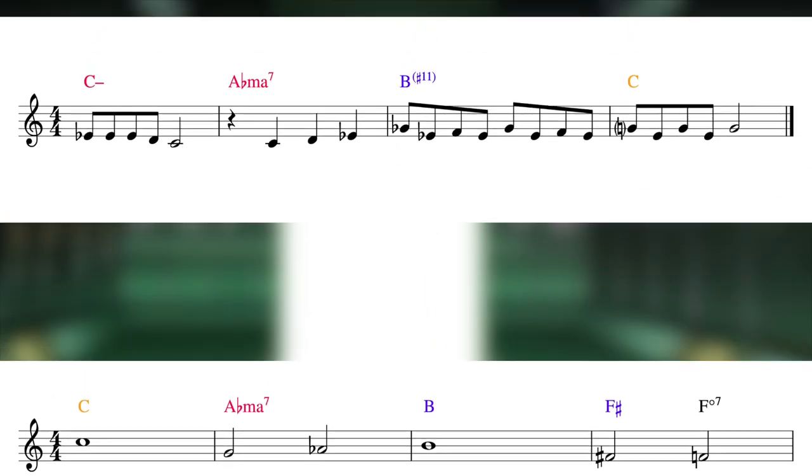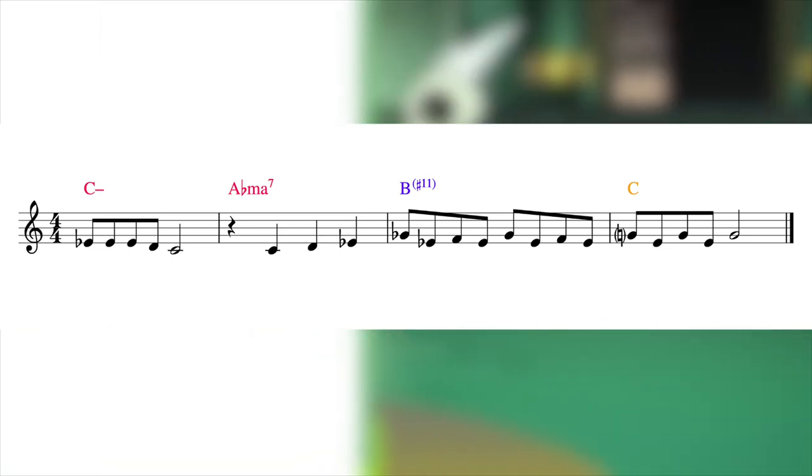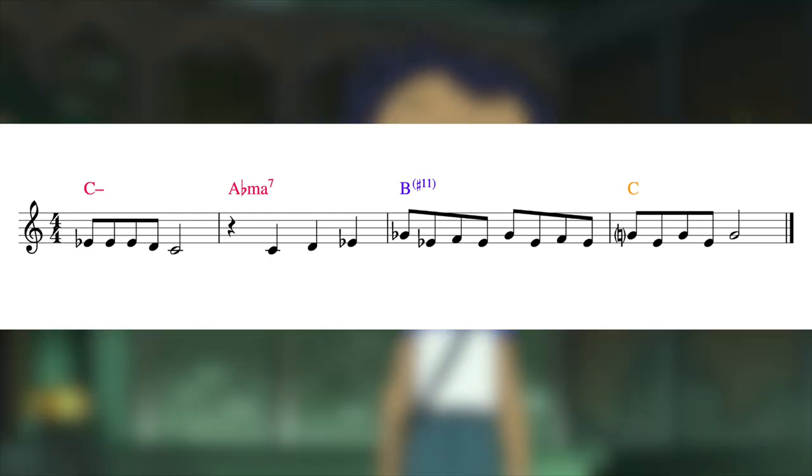After this section, it recapitulates the melody from the beginning, including the original C minor, before doing this B major to C major thing at the very end. Something neat is that the B major highlights the sharp 11, F, in the melody.